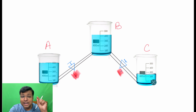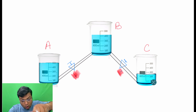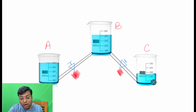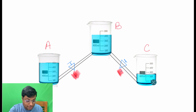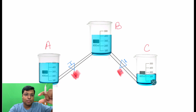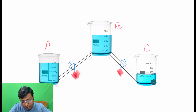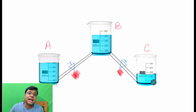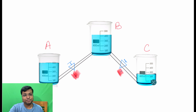Initially they have different levels of water, but if you open both valves, water will flow from beaker A to beaker B and from beaker B to beaker C — because of the difference in height and volume. Finally, all three beakers will have the same level of water.